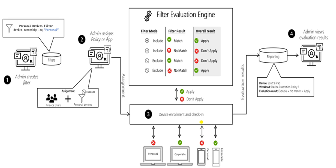Let's understand how filters work. First, as an admin you create a filter. Inside the filter you assign a property — on what basis the filter will work. As mentioned, it's a device property. Here we've taken device ownership, which can be personal or corporate, so we create a personal device filter. That's the first step. Then in the second step, the admin assigns the policy or app with this filter.